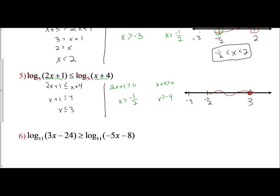That would be negative 1 half. So my solutions can only exist between negative 1 half and 3, giving us the compound inequality negative 1 half is less than x, which is less than or equal to 3, because 3 is included.